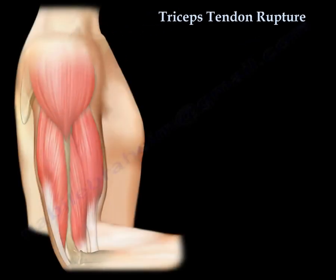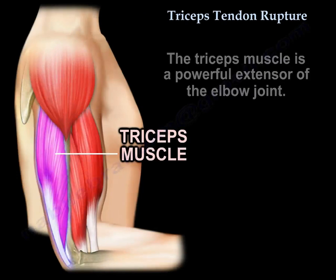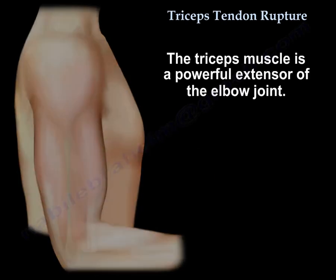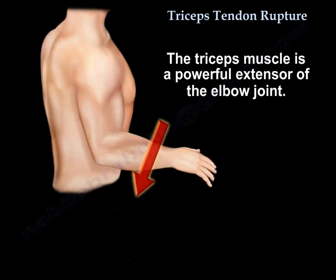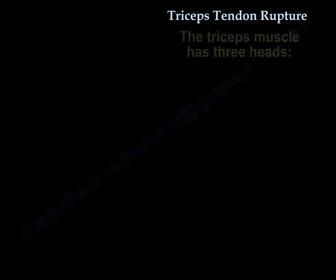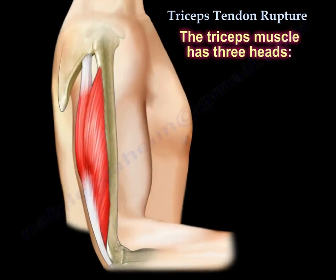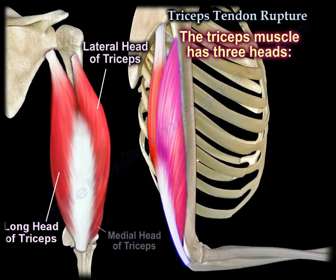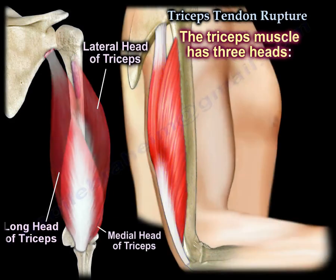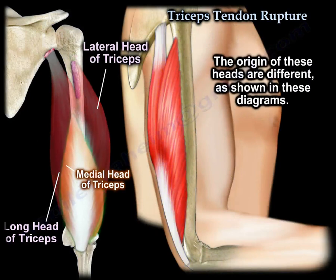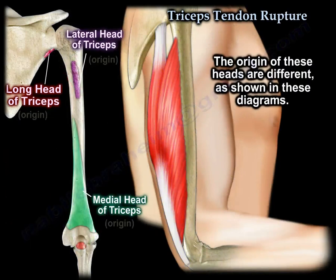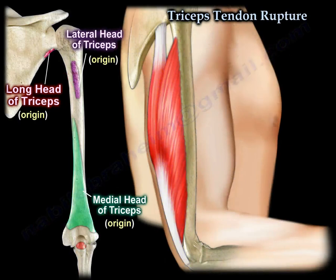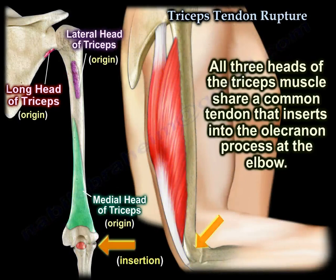Triceps Tendon Rupture. The triceps muscle is a powerful extensor of the elbow joint. The triceps muscle has three heads: the long head, the lateral head, and the medial head. The origin of these heads are different, as shown in these diagrams. However, all three heads of the triceps muscle share a common tendon that inserts into the olecranon process at the elbow.